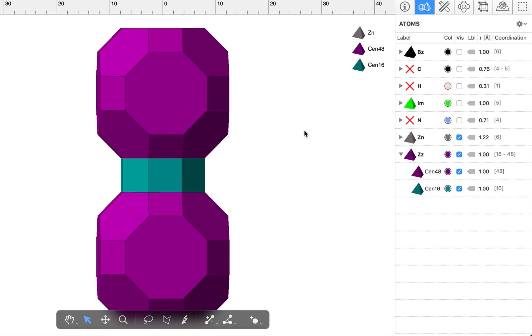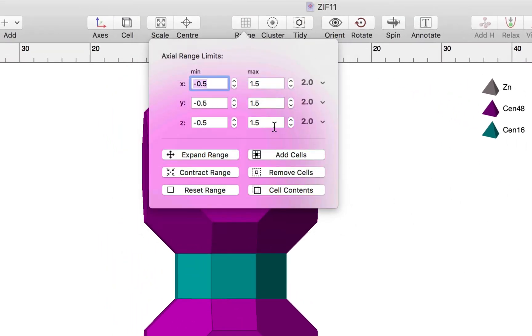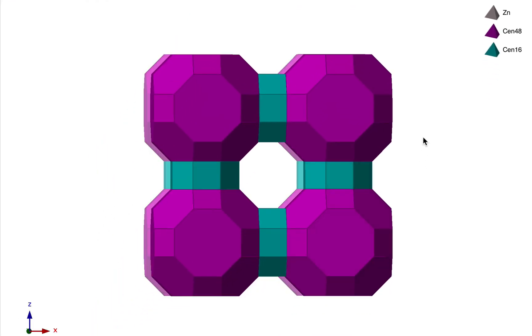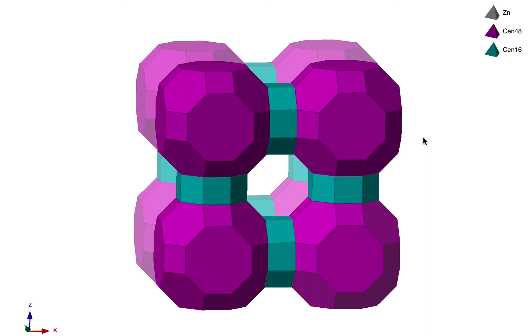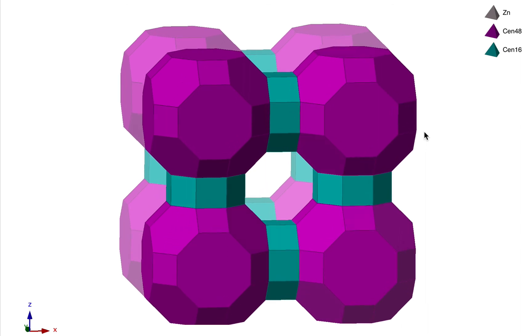If we go back to the full plot range, then we can see that the entire structure is built out of these large 48-vertex polyhedra, which are connected with these little side connectors.